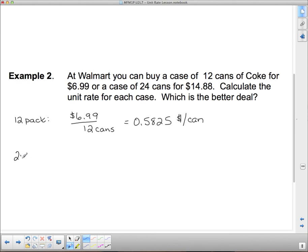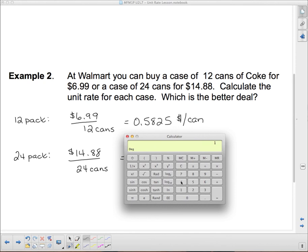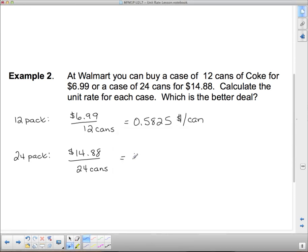Now, how about the 24 pack? And again, we want dollars per can. How much for one can? So, I'm going to put the dollars on top, $14.88 over 24 cans. So, let's actually do that. $14.88 divided by 24 is 0.62. $0.62 per can. So, it looks like these cans are more expensive. We'd be better to buy the smaller pack than we would the larger pack. So, I'm going to say this is the better deal.